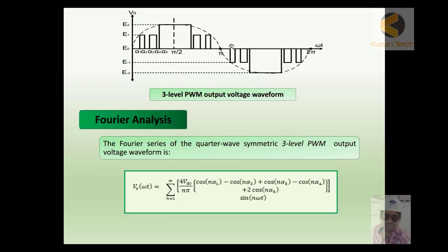This is the mixture of two techniques and this is the Fourier analysis. The Fourier series of the quarter-wave symmetric three-level PWM output voltage waveform is shown. In this one we have drawn basically a three-level PWM output voltage waveform; it has only three levels.